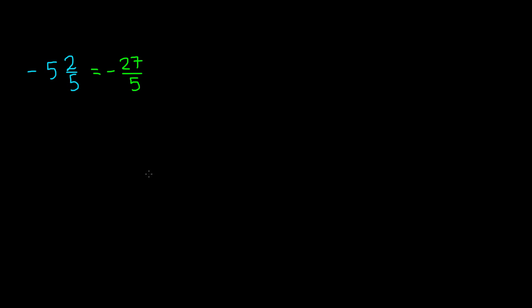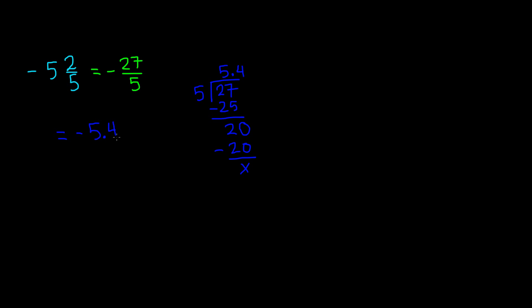Next we have to change this into a decimal. Once again, we can leave the negative sign alone and divide 27 by 5, then add it back to our answer. So 27 divided by 5 — we know that 5 goes into 27 five times and we're left with 2. We add a decimal point in our quotient, add a 0, and then we have 5 times 4 which gives us 20. So our answer is 5.4, but remember to add back the negative sign. So the final answer is going to be negative 5.4.